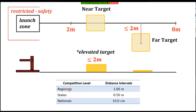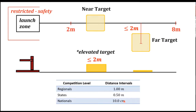That distance can be defined in one-meter intervals at regionals, so the event supervisor can say 'launch it to three meters.' At states, the intervals go down to 15 centimeters, and at nationals, it goes down to 10 centimeters. So, as with Gravity Vehicle, you need to control where your projectile falls to the nearest 10 centimeters or less. You'll probably have teams hitting bullseye, so this is really about whose device can perform most consistently and most precisely.